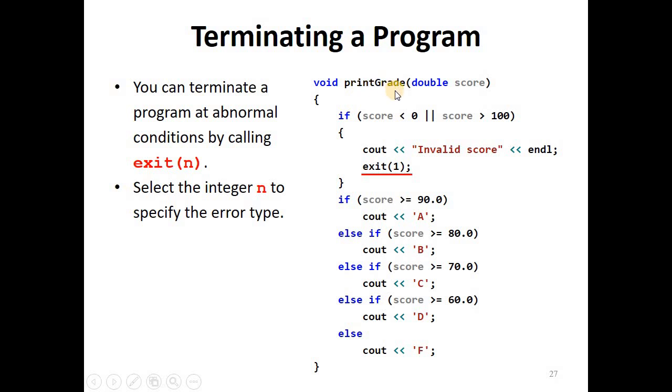Now, let's modify the print grade function so that it uses the exit function. Here we have added a test. If the score is illegal, the score should be between 0 and 100. But if the score is less than 0 or the score is greater than 100, then we can print to the user invalid score and execute the exit function. The exit function will terminate the program without returning back to the main function. If this condition is not satisfied, if the score is between 0 and 100, then the program continues to printing the grade.